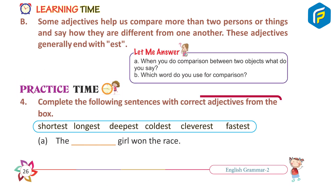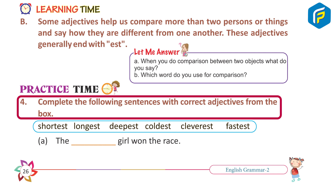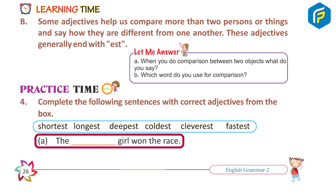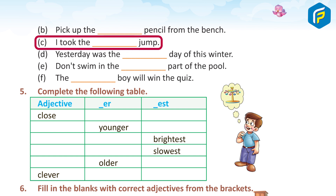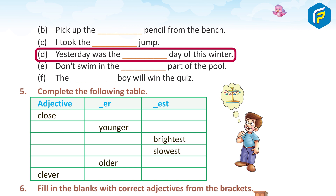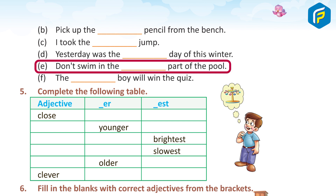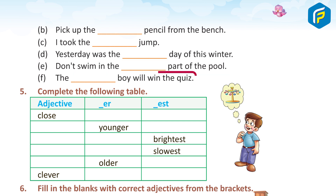Practice Time 4. Complete the following sentences with the correct adjectives from the box. A. The fastest girl won the race. B. Pick up the shortest pencil from the bench. C. I took the shortest jump. D. Yesterday was the coldest day of this winter. E. Don't swim in the deepest part of the pool. F. The cleverest boy will win the quiz.